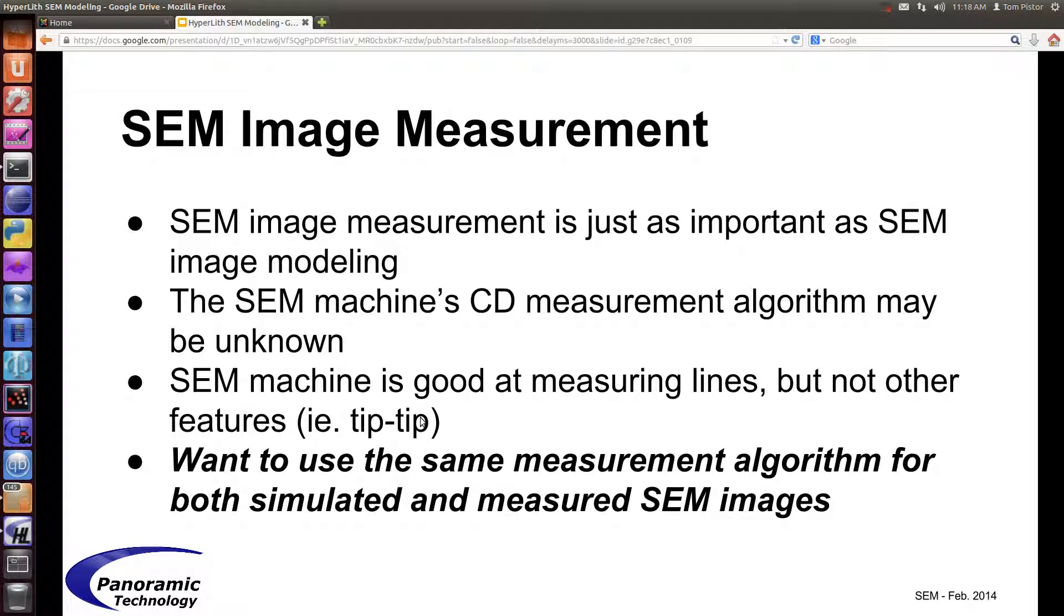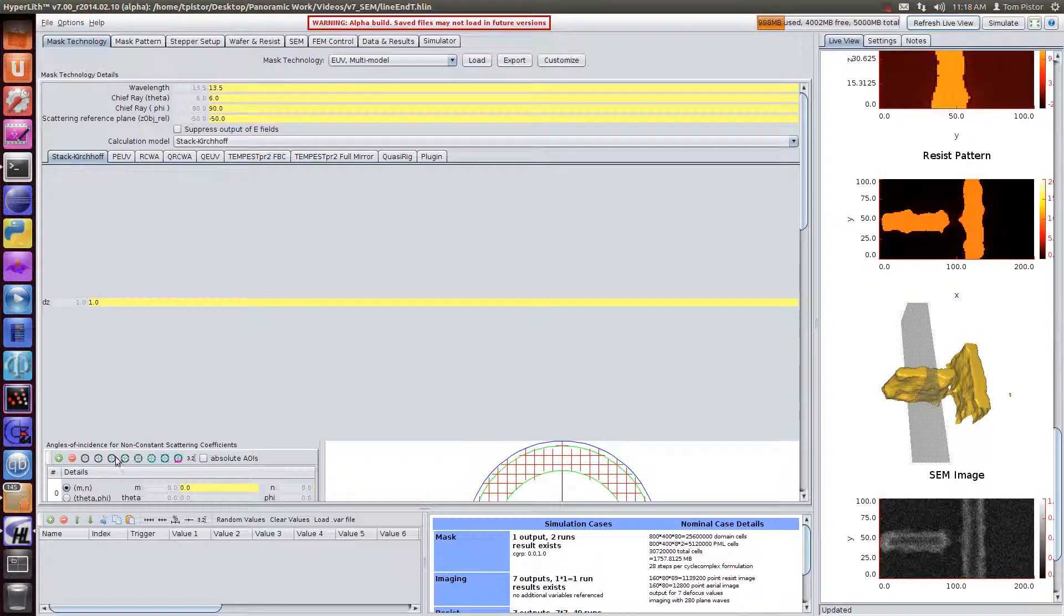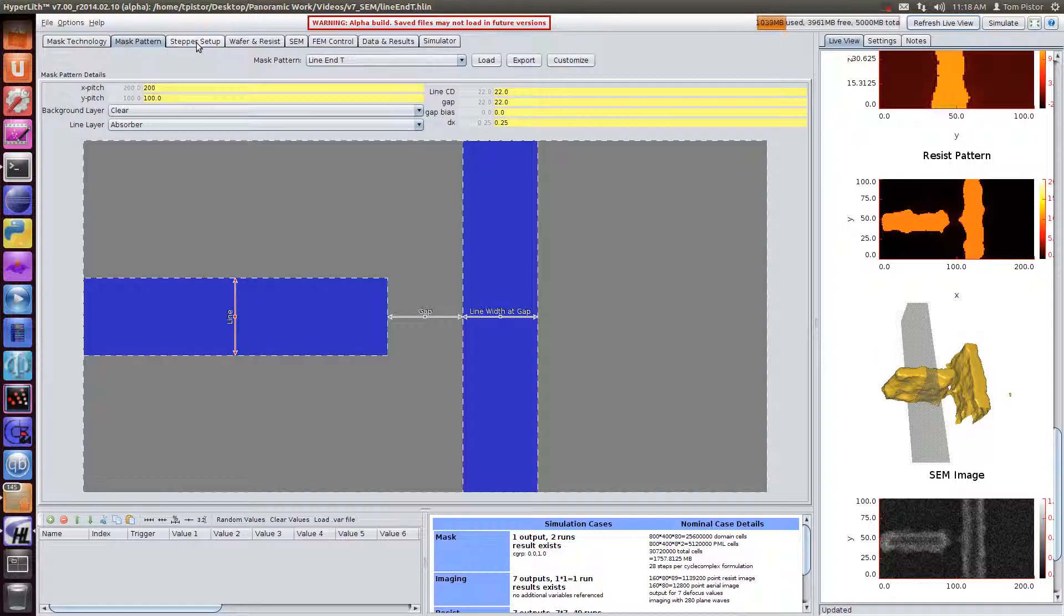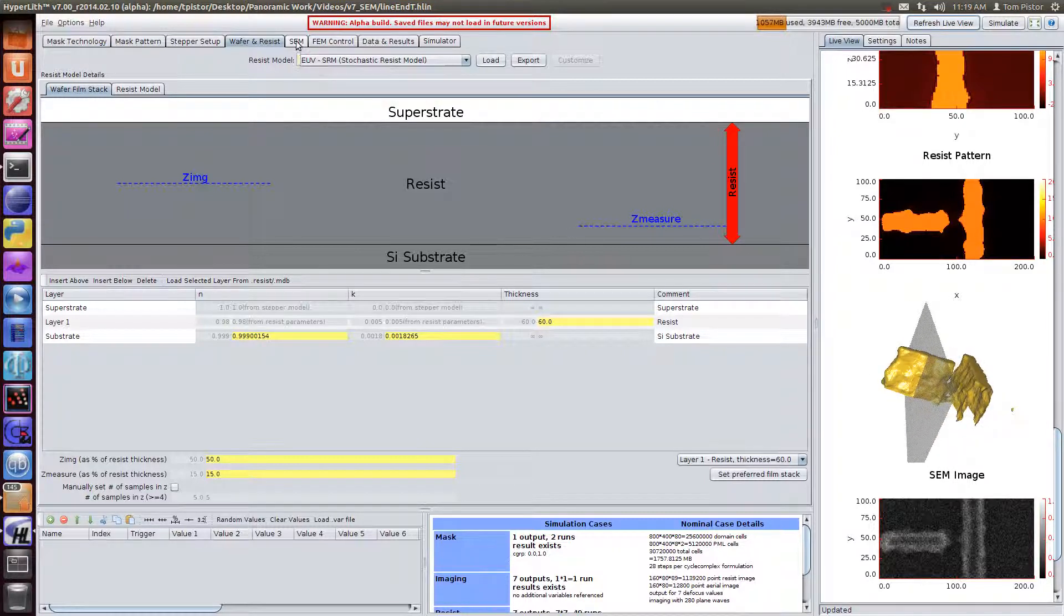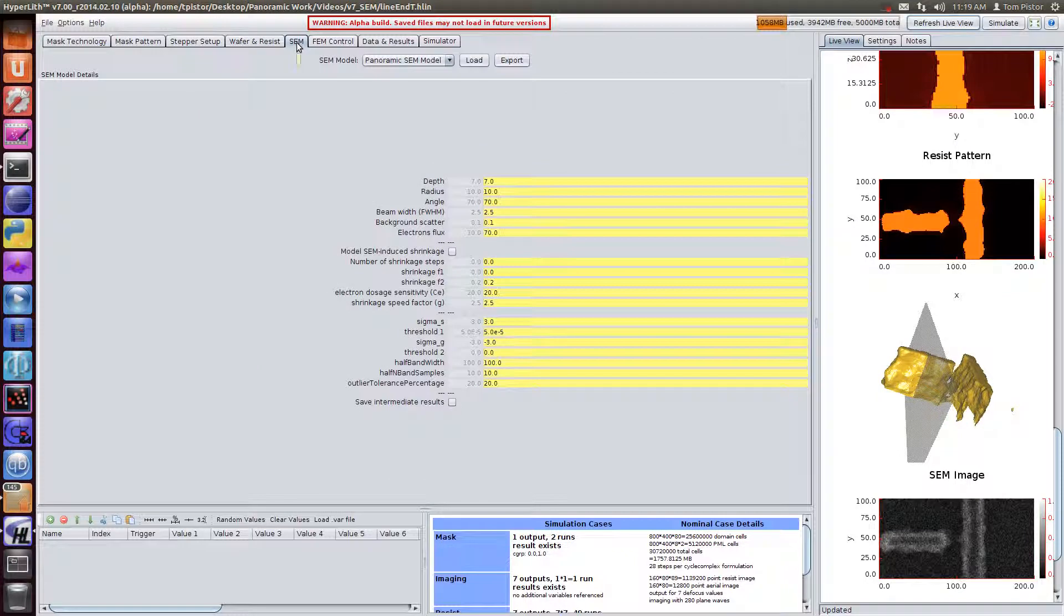Here we just talked about how we produce SEM images. Let me show you quickly where the SEM simulator is in Hyperlith. This will be in version 7 of Hyperlith. Everything looks normal here—you've got your mask technology, your mask pattern. In this case, we've got a line NT, your stepper setup, and then your resist. If you're using a thick resist model, one that outputs a profile, then you can have a SEM simulator here. It's just a new tab here, the SEM simulator.